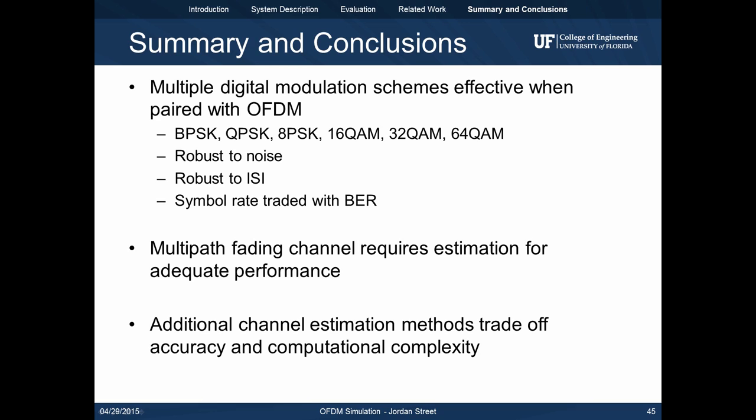Throughout this presentation, we've observed that various digital modulation schemes are effective when paired with OFDM. We specifically looked at BPSK, QPSK, 8PSK, 16, 32, and 64QAM, all showing robust performance to noise and inter-symbol interference. When simulated with multipath fading, channel estimation was necessary to produce acceptable results. In general, we see that channel estimation methods trade off accuracy with computational complexity.